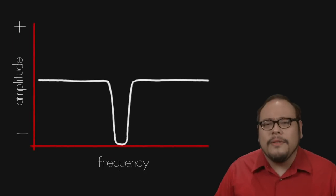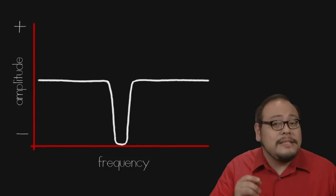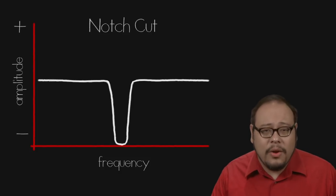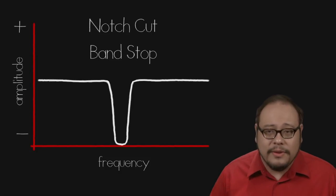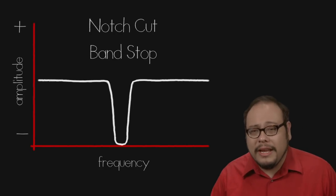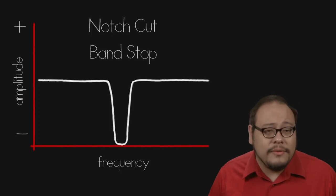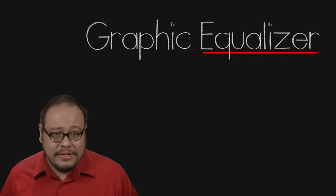A really high Q filter is used to completely eliminate a particular frequency is sometimes called a notch cut or band stop filter. This is used to eliminate constant frequency based noise like electronic hum or to prevent feedback in a live audio setting. Another type of equalizer you may come across are graphic equalizers.